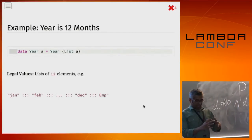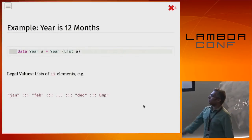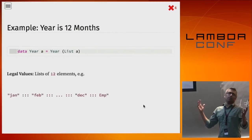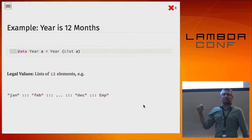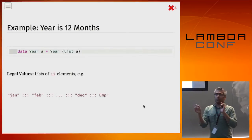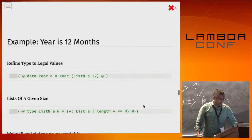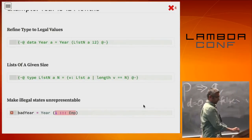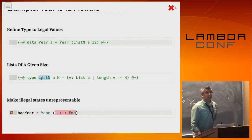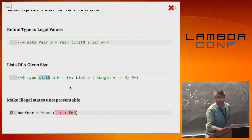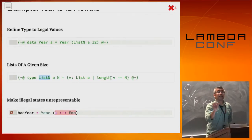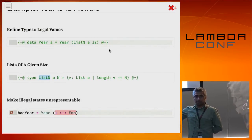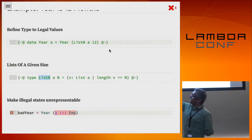For example: imagine a data type representing a sequence of values, one for every month of the year. Data Year A = Year (List A). But since it's supposed to be a year, I want to rig it so that list has size exactly 12. I don't want you to be able to pass a list with two elements. So I create a refined data definition: type ListN A N = {v : List A | length v = N}. Then Data Year A = Year (ListN A 12). Now illegal states have become non-representable — a Year with just one element is rejected.